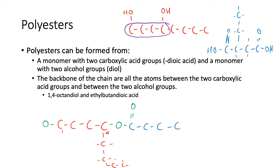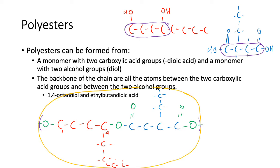The backbone of the chain consists of all the atoms between the two carboxylic acids and the two alcohol groups. Between the two carboxylic acid groups there are four backbone carbons, with an ethyl side group attached somewhere along them, and then the ester group completes the link. This constitutes one repeating unit — one repeating unit of all the monomers. You'll notice the carbon with the side group can appear on the left or right depending on how the molecule is oriented.